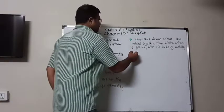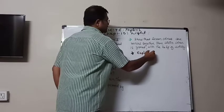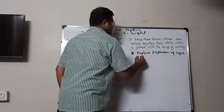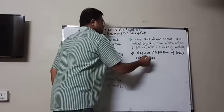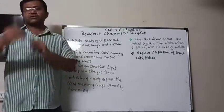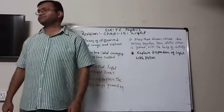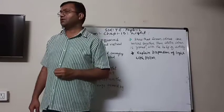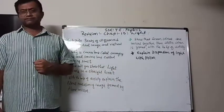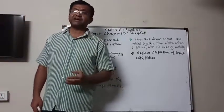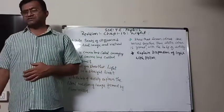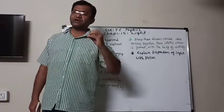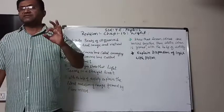Next question: explain dispersion of light with a prism. We know that a prism is made of glass — it has two triangular sides and the other three are rectangles. It is made from transparent glass. When white light from the sun or any other white light falls on it, it splits that white light into its original seven colors — VIBGYOR. This phenomenon of splitting white light into its seven colors is known as the dispersion of light.